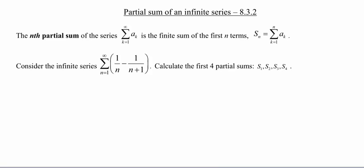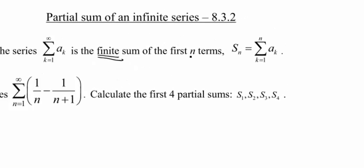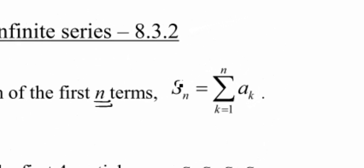Let me emphasize that this is a finite sum, so it should have a number to it, and it's of the first n terms only. This is defined as s_n equals the sum as k goes from 1 to n of a_k.